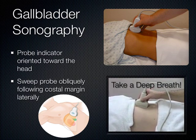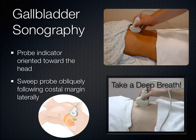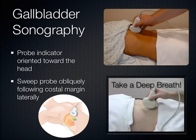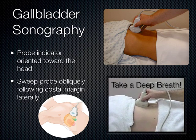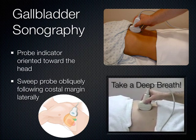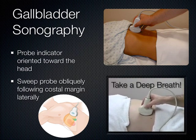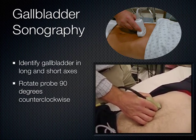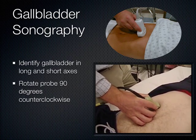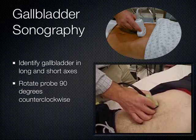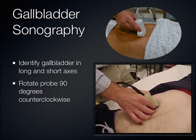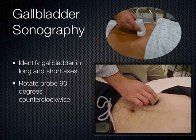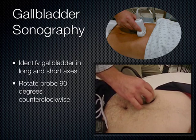Switching to the gallbladder. Place the indicator towards the patient's head in a sagittal plane — the patient takes a deep breath — that's the subcostal sweep. Once you get the gallbladder in its long axis, rotate the probe 90 degrees to get the short axis. Fan through the entirety of the gallbladder in both axes looking for any type of pathology.